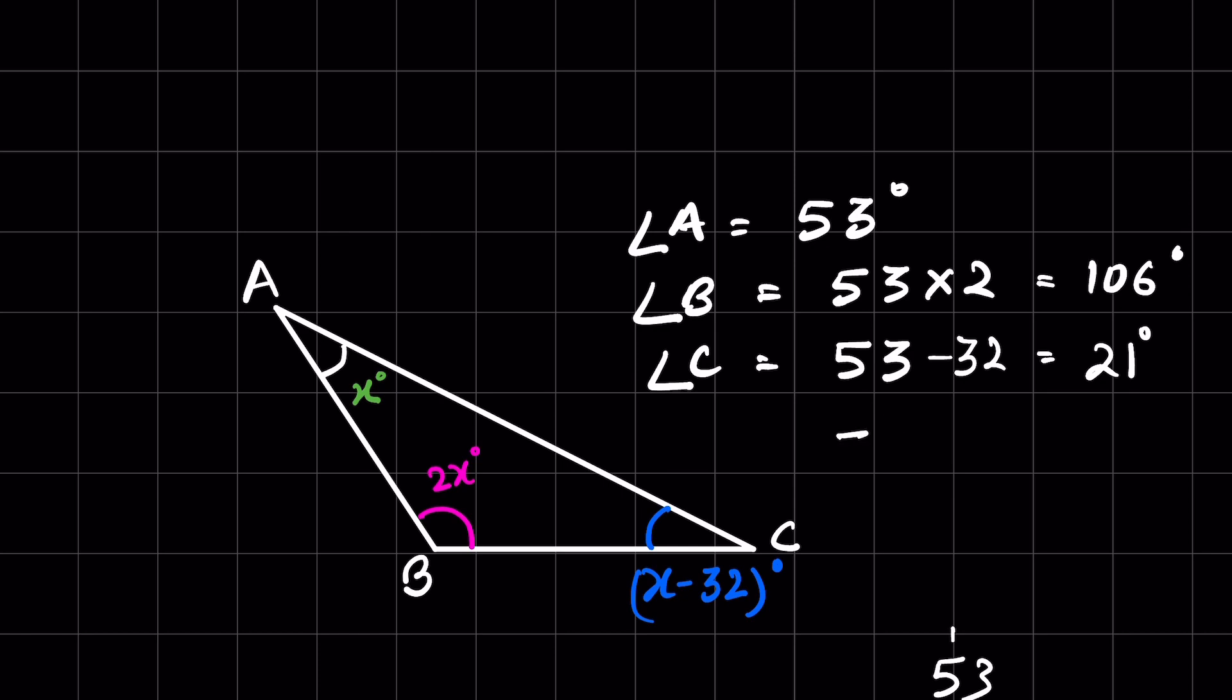Now let's add and check all the angles: 53 plus 106 plus 21, whether it is equal to 180 degrees or not. So 6 plus 1 plus 3 is 10, you write 0, 1 is carryover. 2 plus 1 is 3, and 3 plus 5 is 8, and 1. So LHS is equal to RHS. Answer is verified.